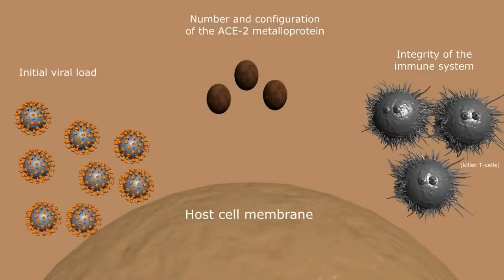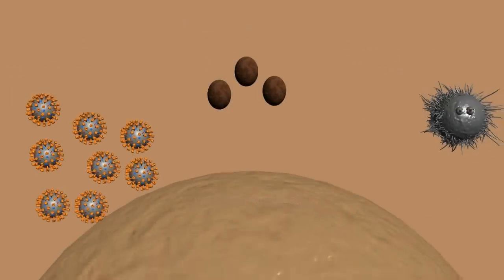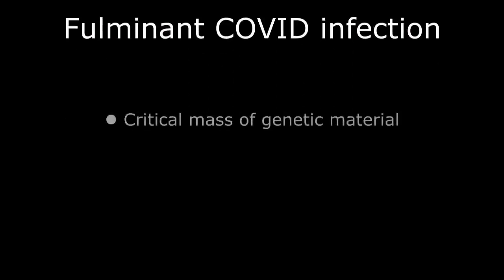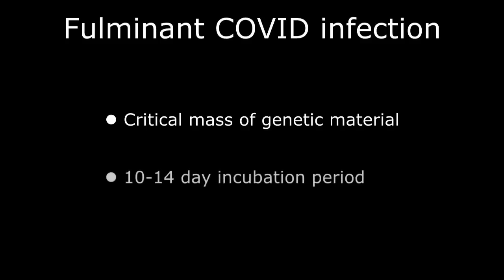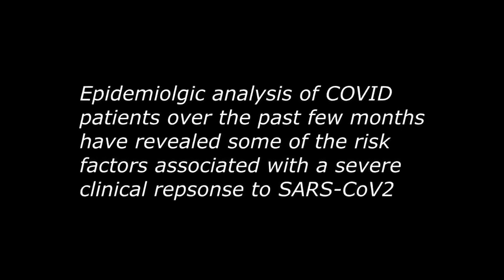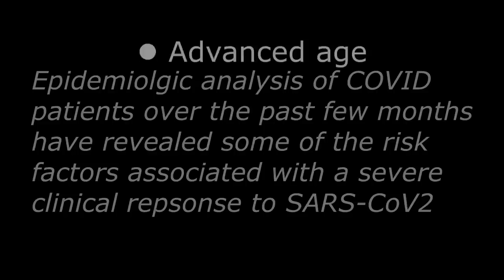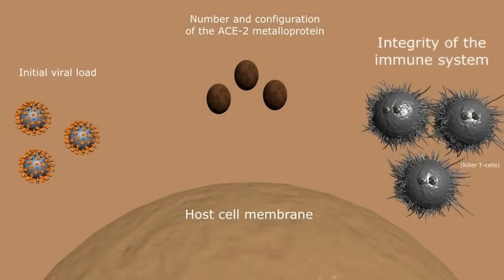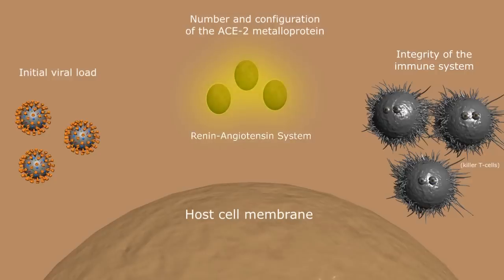However, with a large initial viral load or weakened immune system, an abundance of viral genetic material is available in the cytoplasm for reproduction, producing an overwhelming number of new viral particles that can infect other cells in the body, starting a chain reaction and fulminant COVID infection. Like any chain reaction, there needs to be an initial critical mass of material to sustain the process, which could explain the 10- to 14-day incubation period observed in many COVID patients. Epidemiologic analysis of COVID patients over the past few months has revealed some of the risk factors associated with a severe clinical response to SARS-CoV-2, including advanced age, baseline health, physical fitness, and diet.